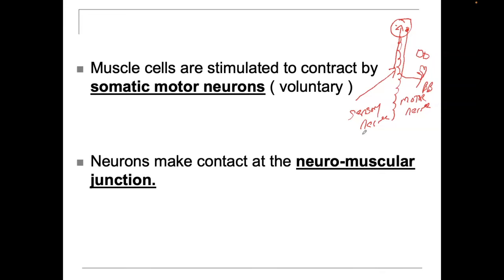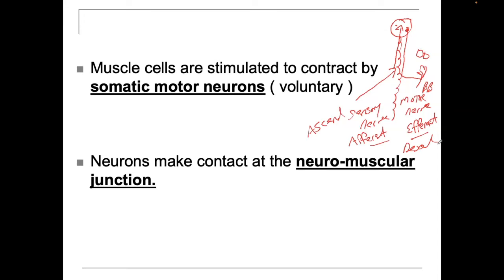I'll plant the seed here — this will come to haunt us when we do neurology. Sensory neurons we call afferent, and motor neurons are called efferent. Afferent signals ascend, meaning they go up. And motor or efferent messages descend, meaning they go down. Pretty simple concept.